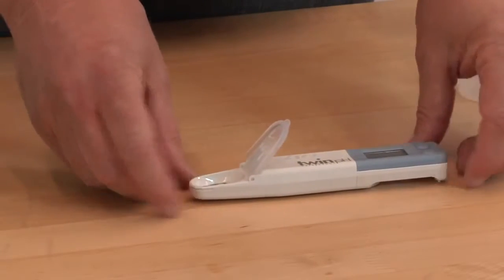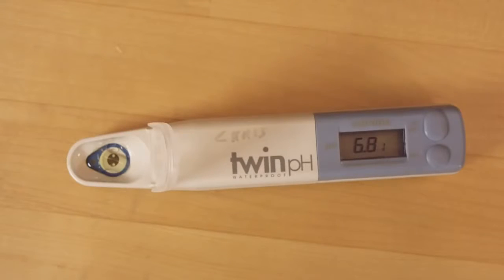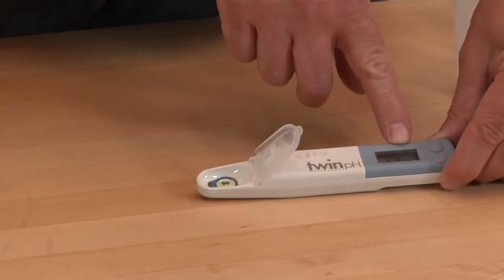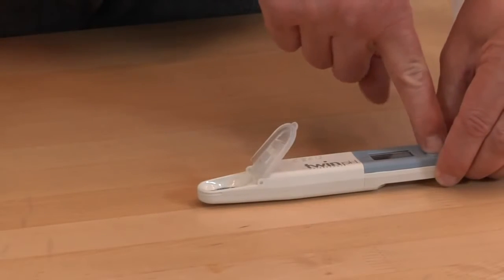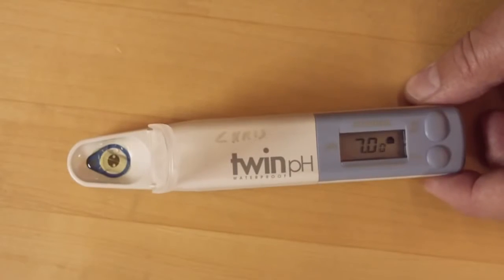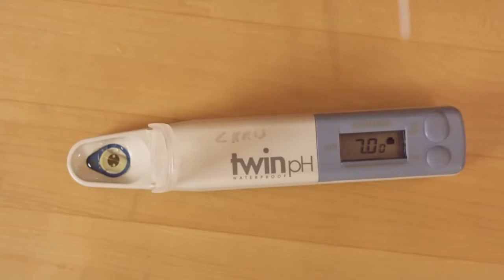So again, when we get a happy face, you can see that we're at 6.99. We want to calibrate to this, so we push the calibrate button. And you can see we're calibrating to 7.00. And we have that little symbol showing we're in calibration mode. Now we just wait for the happy face, and we've done our calibration to pH 7.